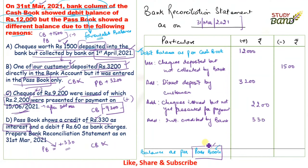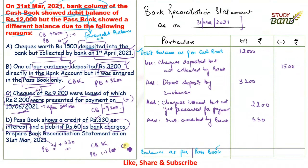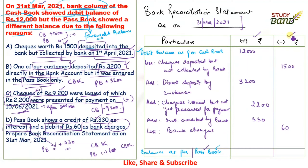Fourth adjustment: the pass book shows a credit of rupees 330 as interest. The bank added interest to your account — pass book was credited with 330 — but the cash book has no entry. Since the pass book added it and we are arriving at the pass book balance, we also add it. Add — interest credited by bank = rupees 330.